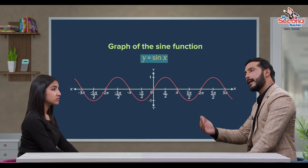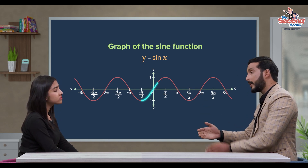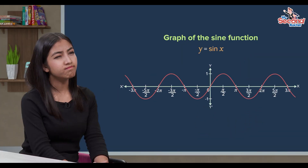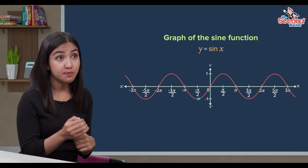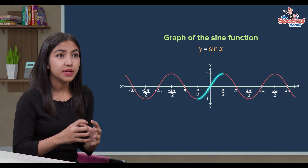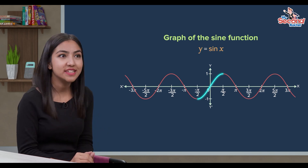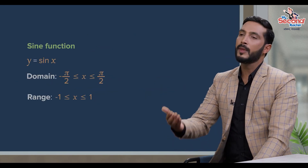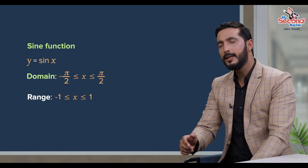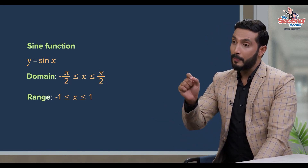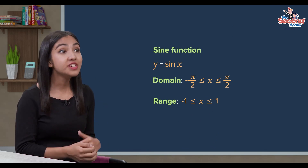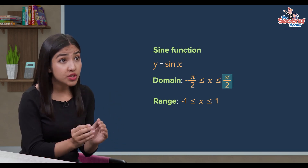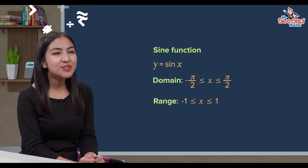Function y equals sin x ma x ko value minus pi by 2 dekhi pi by 2 samma restrict garay hoane y ko value minus 1 dekhi 1 samma ka different value honza. Y equals sin x ko domain lai minus pi by 2 dekhi pi by 2 samma restrict garay hoane matra y equals sin x one to one function honne huna. Trigonometric function y equals sin x ko inverse patta lagauna ko laggi domain lai minus pi by 2 dekhi pi by 2 samma restrict garinza. Student: Teacher, you could have made the domain with the positive circuit.